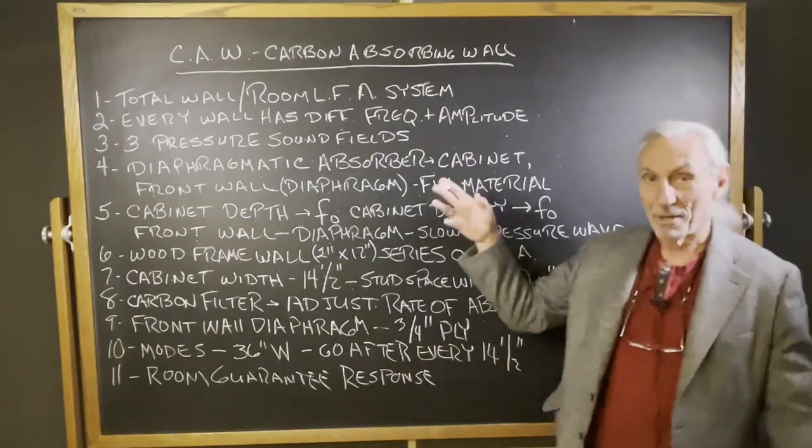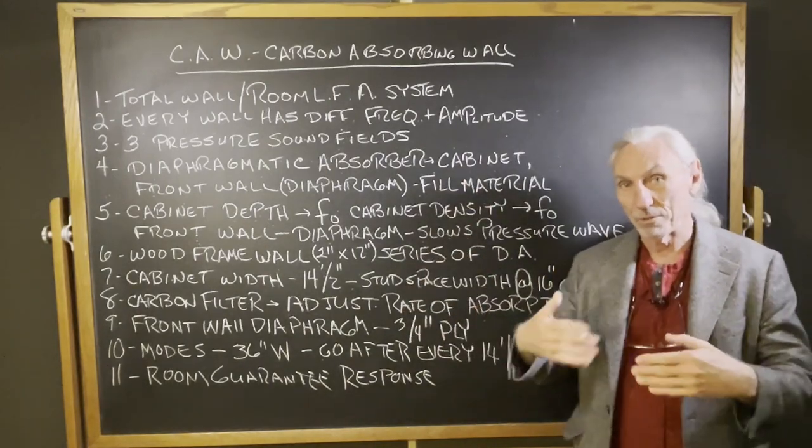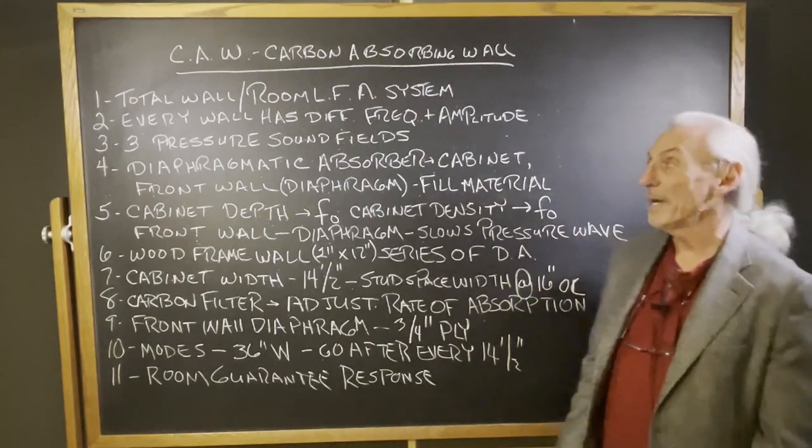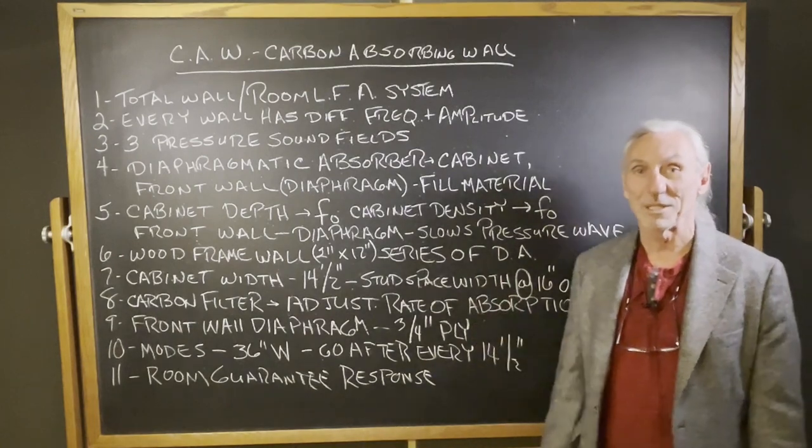We've got those three sound fields we have to work with: side wall, side wall, front to rear, floor and ceiling. So we have to go after these three sound fields using the six surface areas in the room.